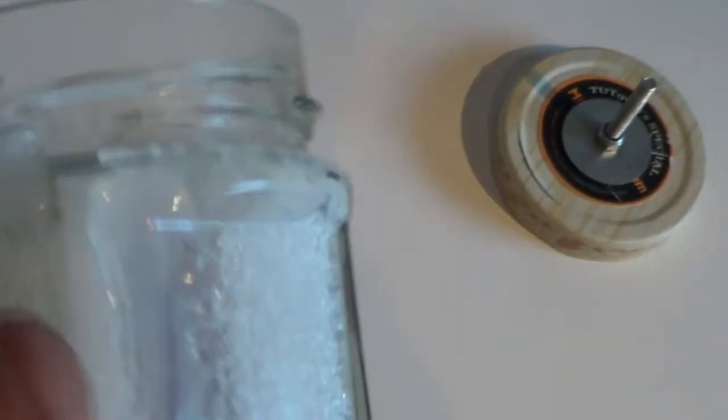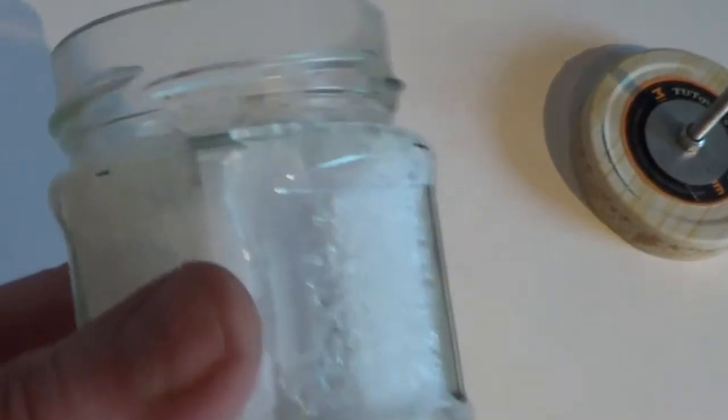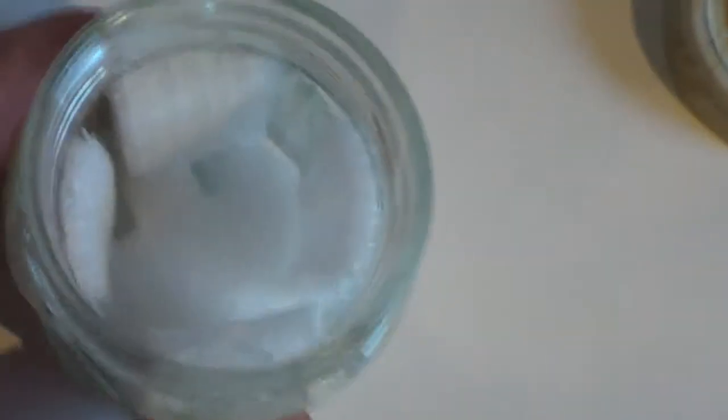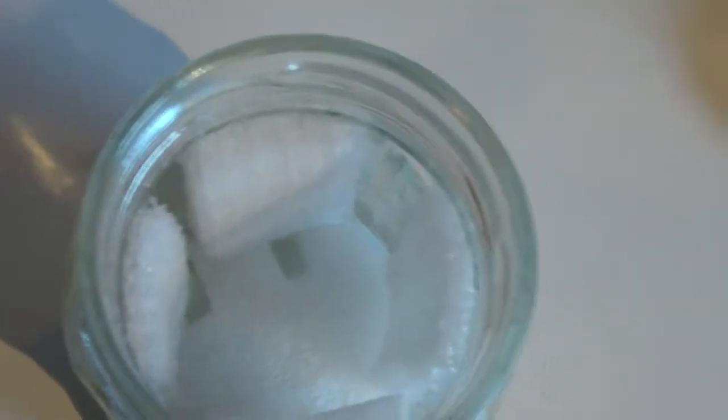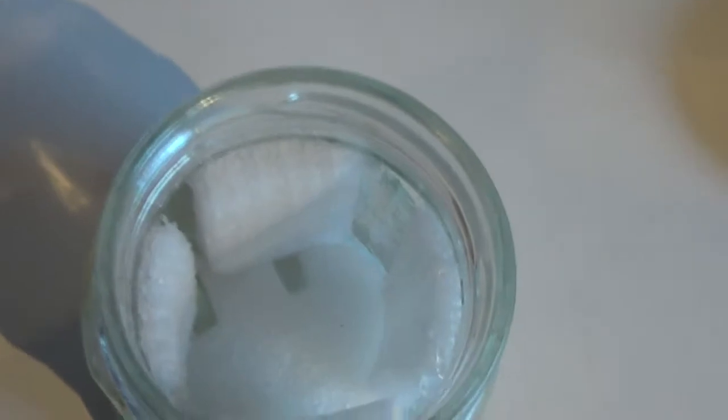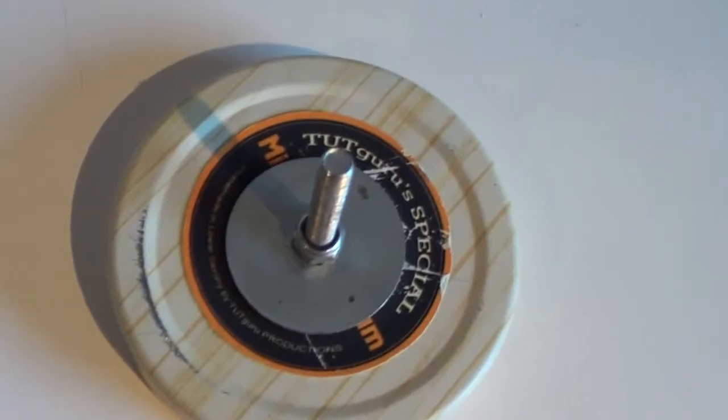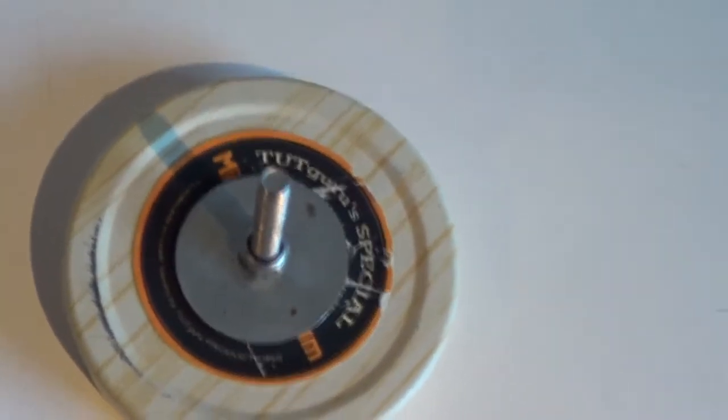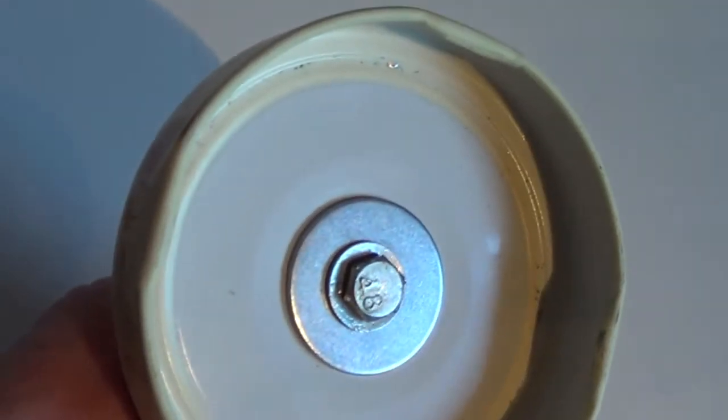It's an empty marmalade jar in which I glued some foam pads to keep the egg nicely in place. Drill a hole through the lid and put a bolt with two washers through it.